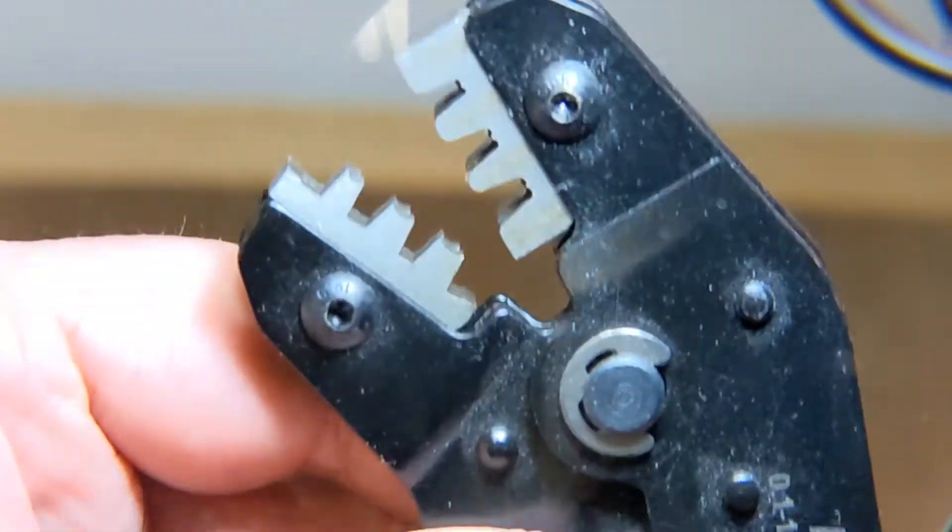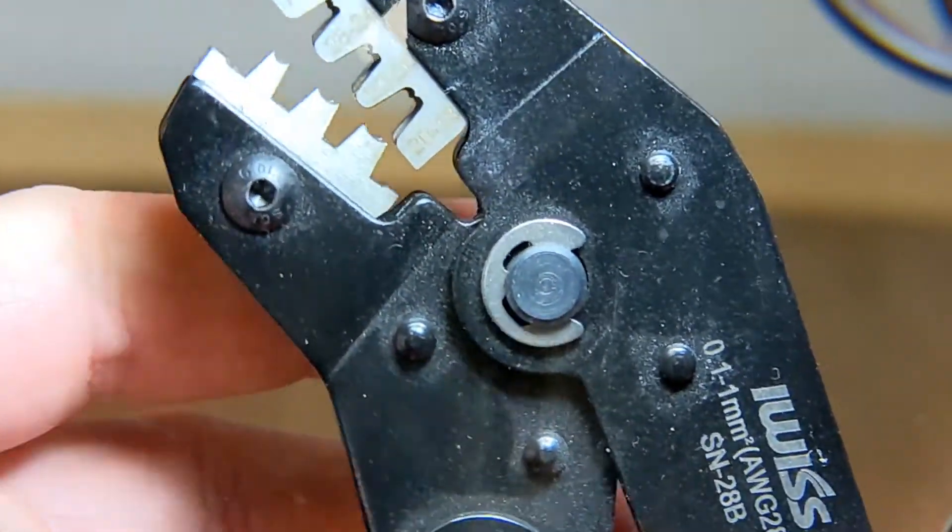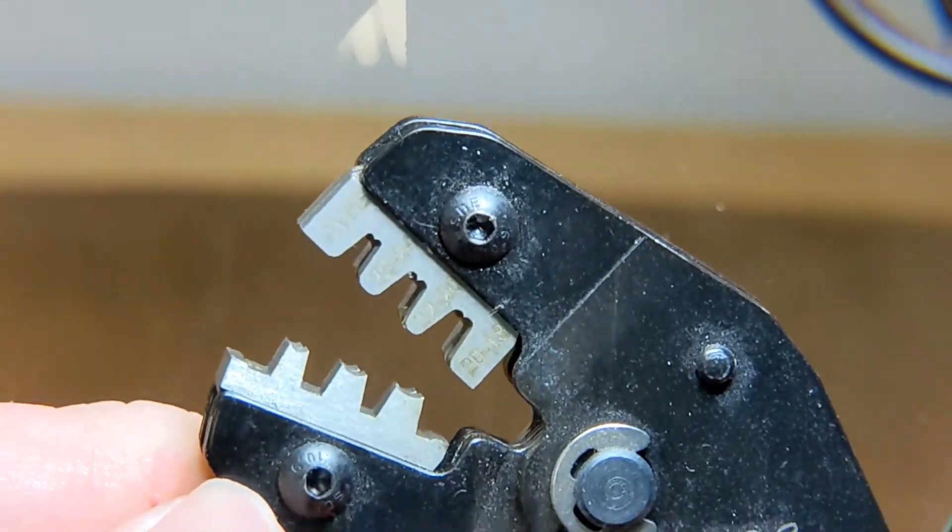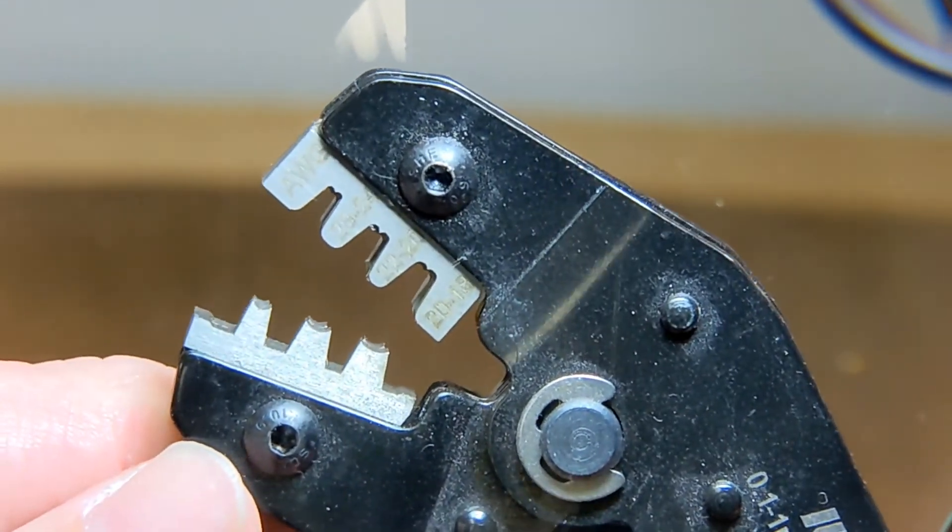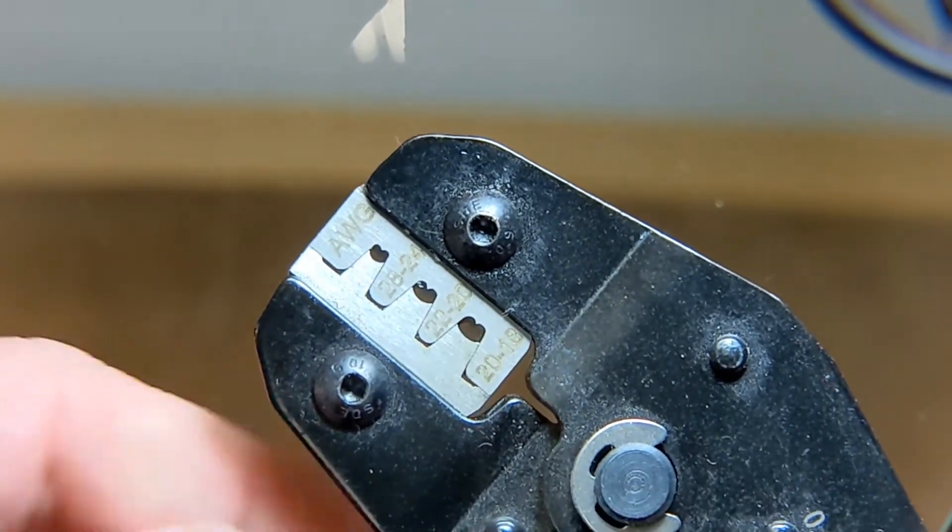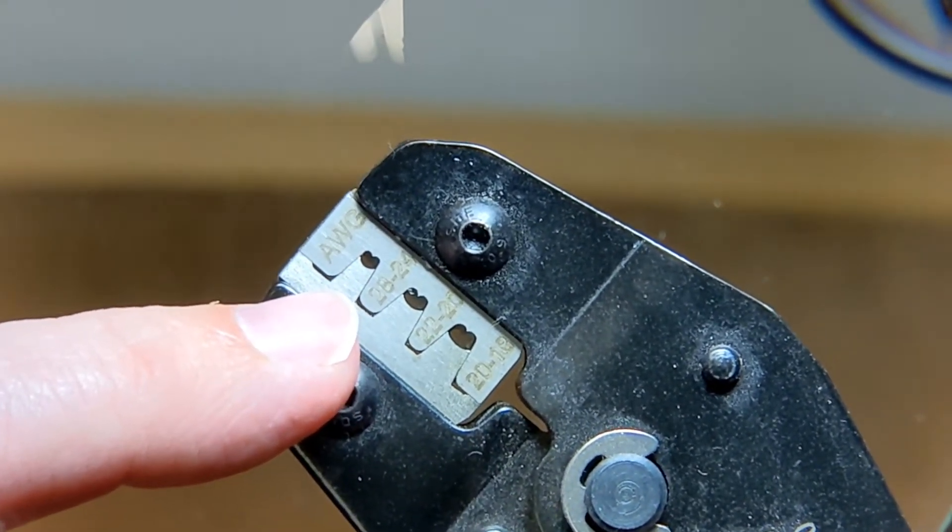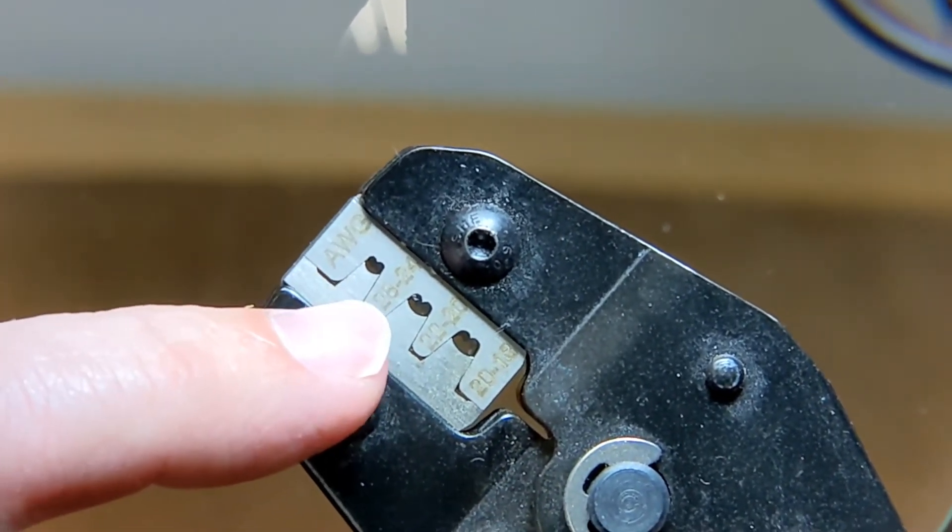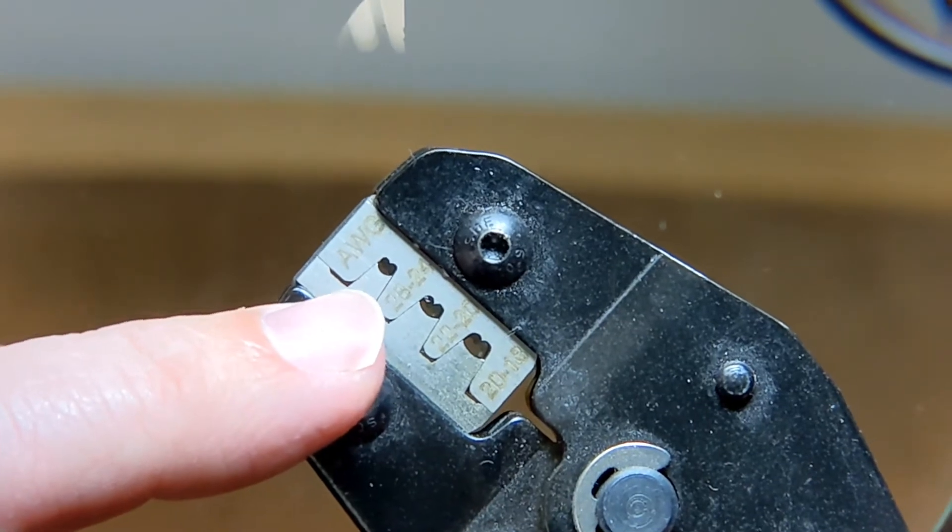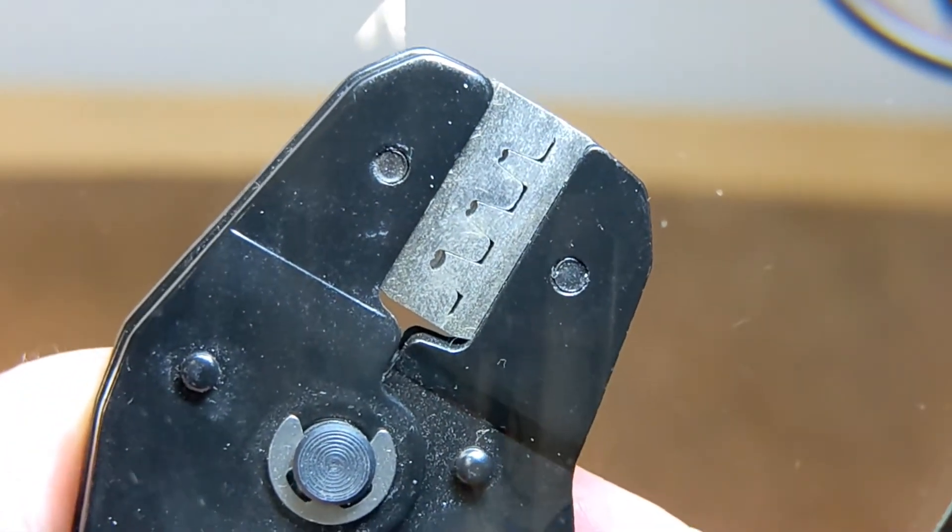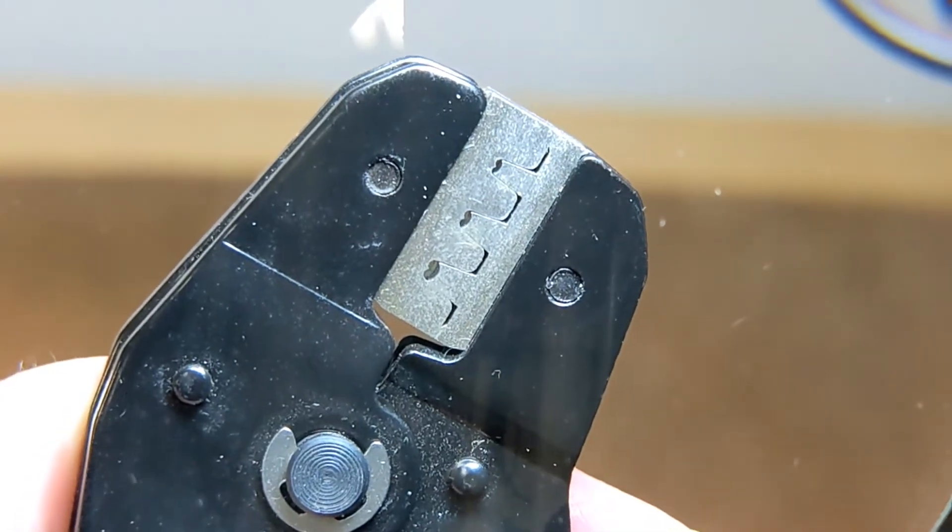If we take a look at a crimper, the crimper that I have, this is a ratcheting crimper. You should always get a ratcheting crimper. It's the best way to know that you've crimped sufficiently. If we were to close this up and take a look, this is the side where there would be the insulation crimp. And you can see the size of the crimp there. On the other side is where the wire crimp is made. And you'll see that it's smaller.